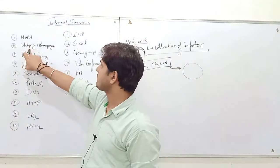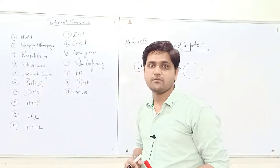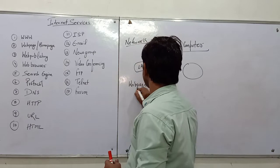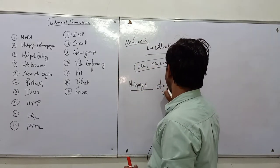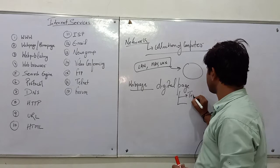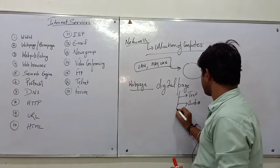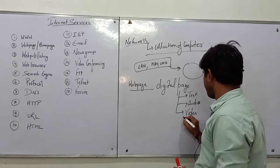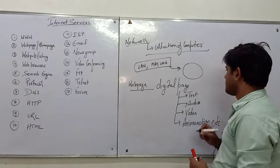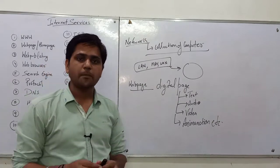Talking about web page and home page — a web page is a digital page containing data in the format of text, audio, video, animation, etc. A home page is the first page of a website, which is also known as the main page of a website.